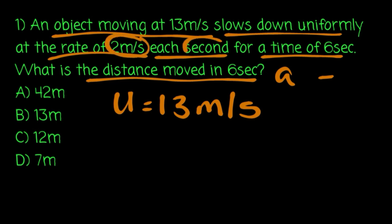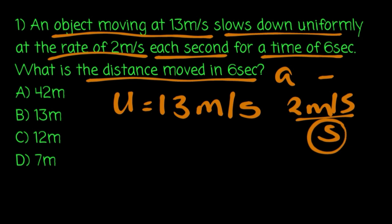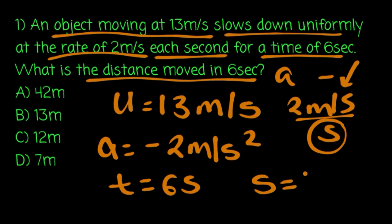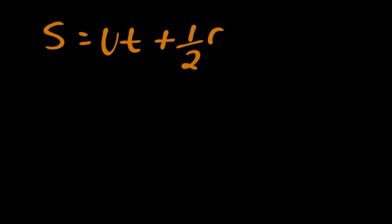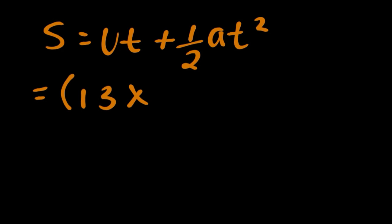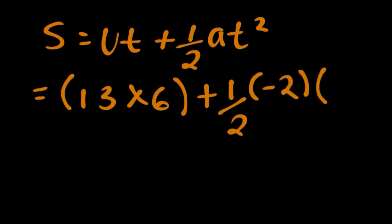The rate of 2 m per second each second — 2 m per second per second — so acceleration is negative 2 m per second squared. Using the distance formula: distance equals ut plus 1 over 2 times acceleration times t squared, with acceleration negative 2 and time 6.